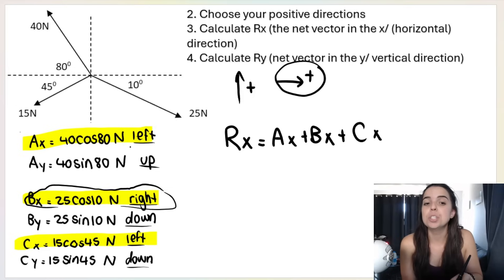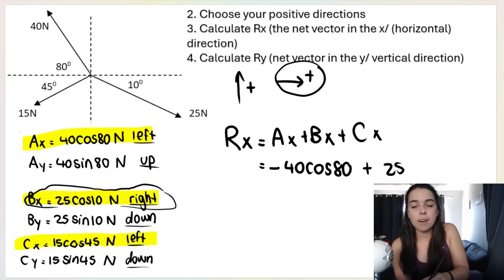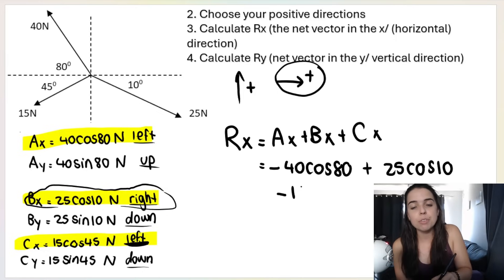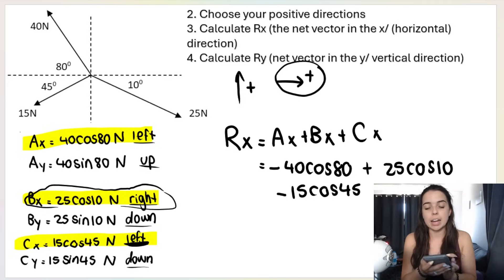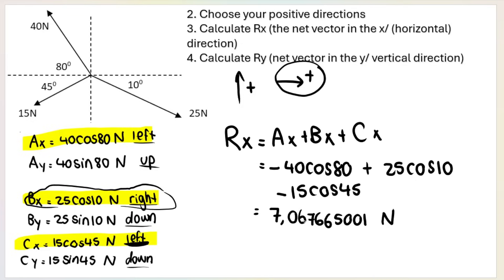I'm going to substitute with signs based on direction. A-x is going to the left, so it's negative: −40 cos 80. B-x is going to the right, so it's positive: +25 cos 10. C-x is going to the left, so it's negative: −15 cos 45. Type all of that into your calculator and you get the resultant in the x direction. I get 7.06... newtons. My calculator gave a positive answer, and positive means to the right, so R-x is to the right.